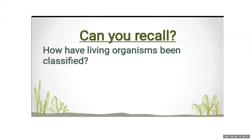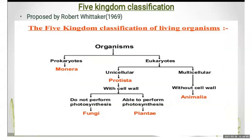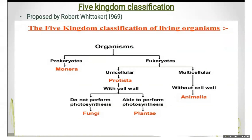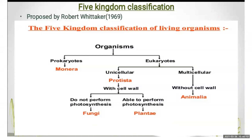In our environment, there are many different types of plants and animals. So for this, the classification is divided into five kingdoms. The five kingdom classification system was proposed by Robert Whittaker in 1969 for the study of living organisms.